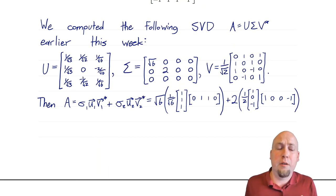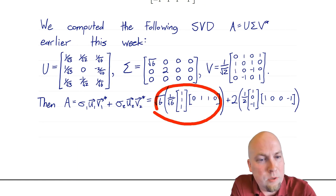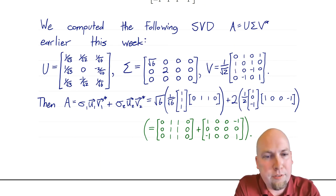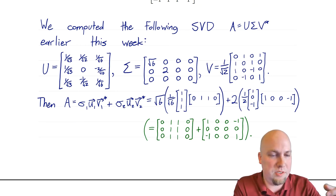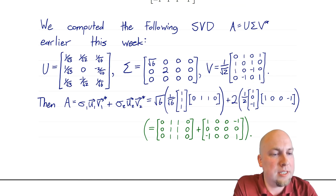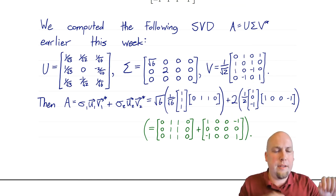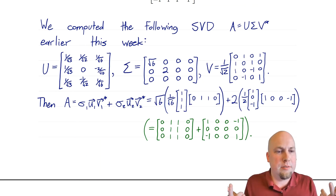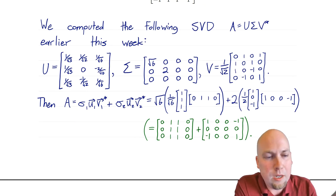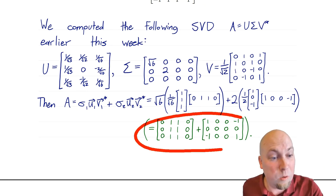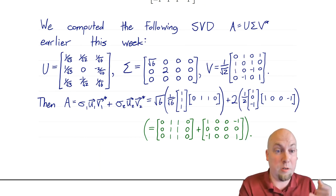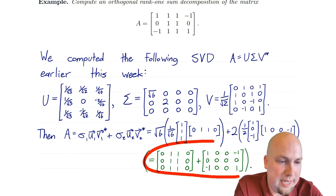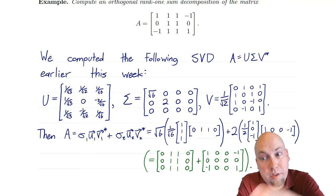It's worth actually multiplying out these terms. If we multiply out the entire first term, we get a matrix with the same entry in every row — a matrix of all ones and zeros arranged in a particular pattern. And if we multiply out the second matrix, we get a matrix with entries only in the corners. Both of these matrices are rank-1 and they're orthogonal in the Frobenius inner product: if you take the trace of one starred times the other, or do the dot product of matrices, you'll see they're orthogonal with respect to the standard inner product of matrices. And they really do add up to matrix A.